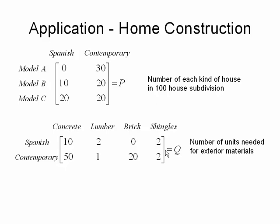The second matrix, I've called matrix Q, and that particular matrix talks about the type and also what we're going to use for the exterior materials. It's a 2 by 4 matrix.